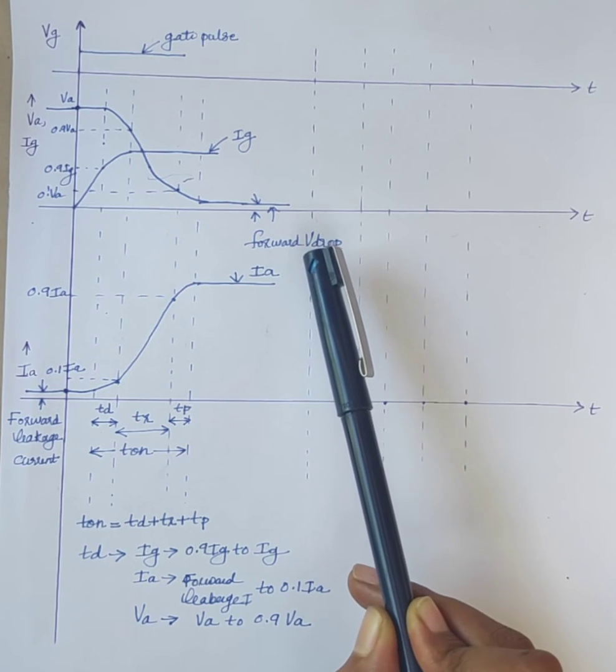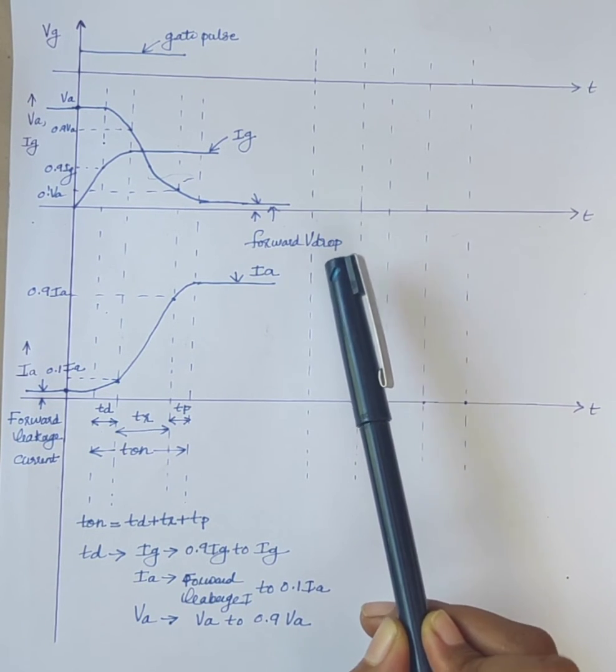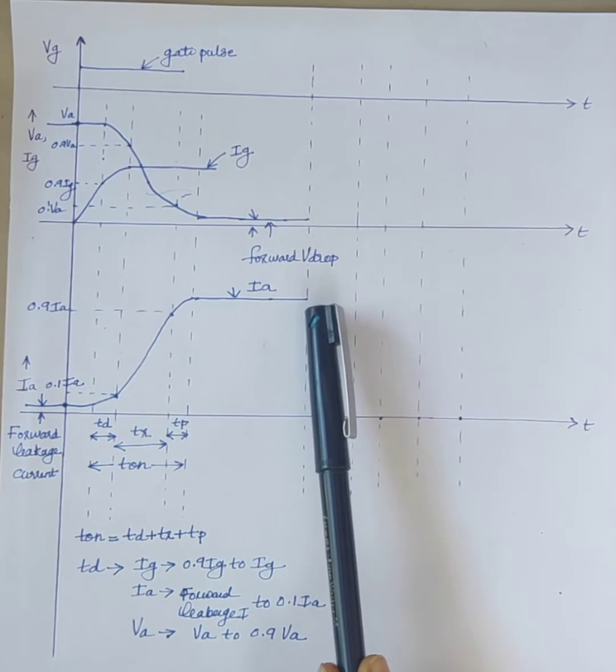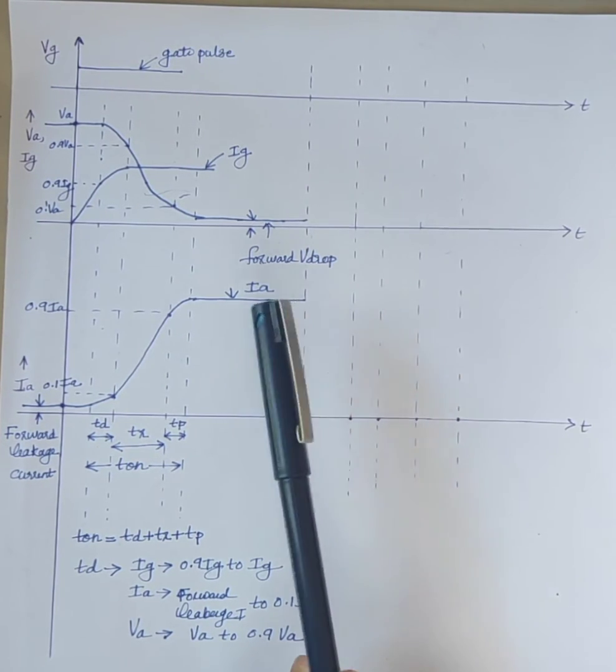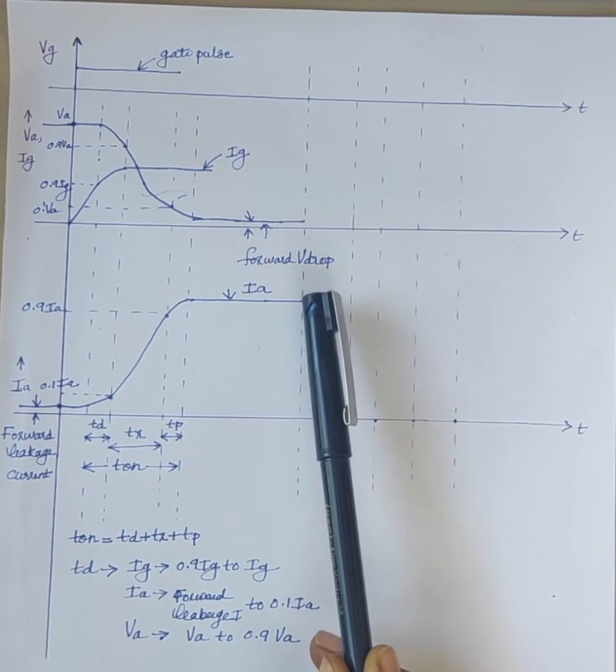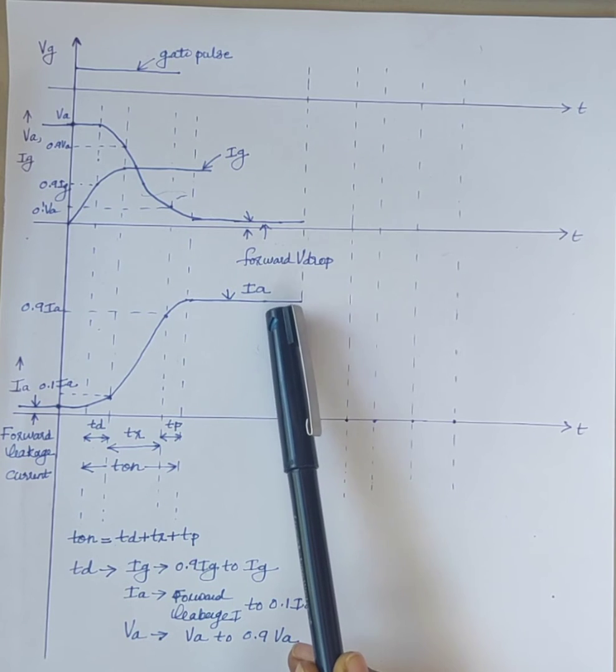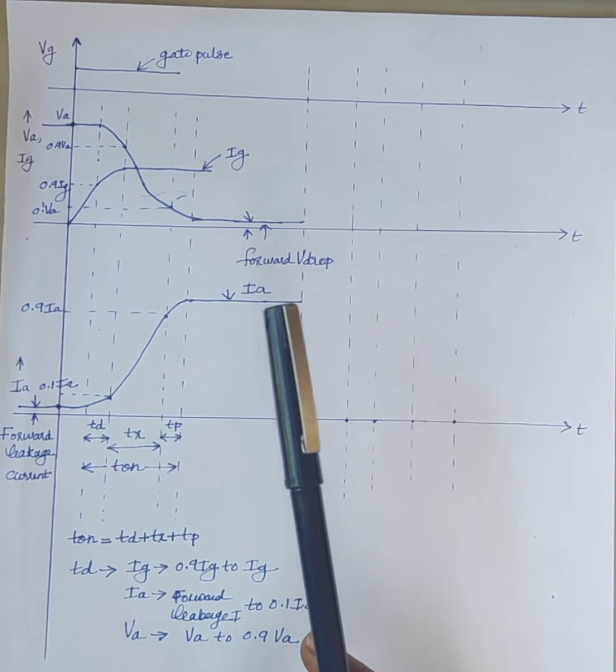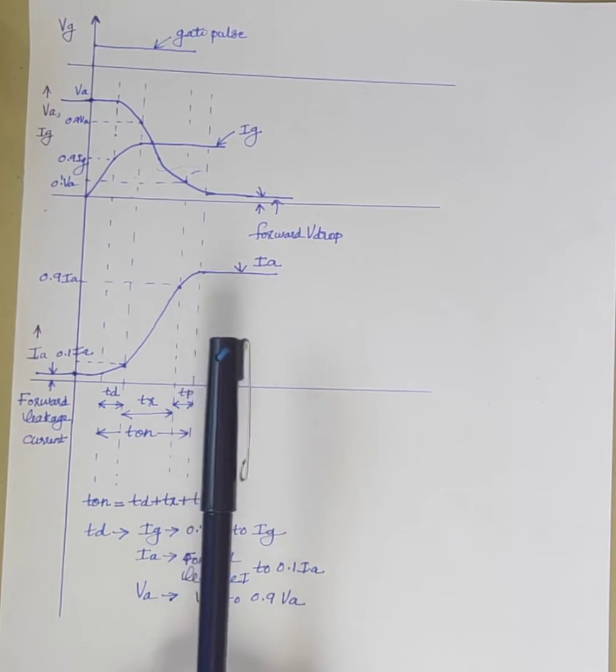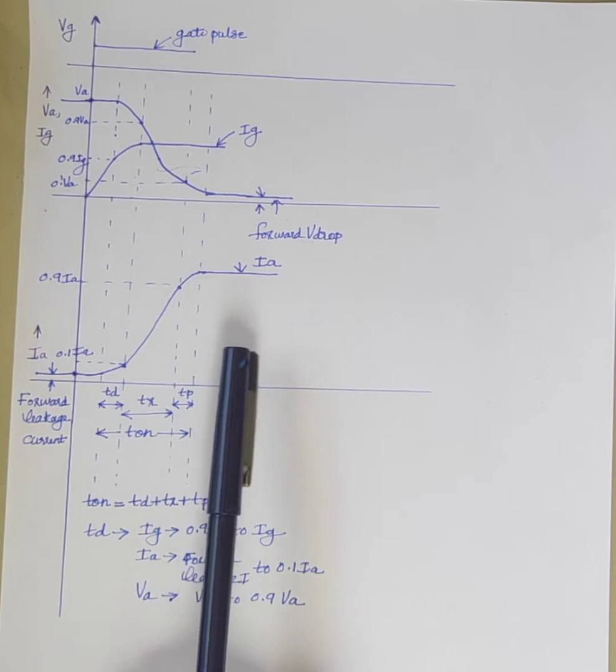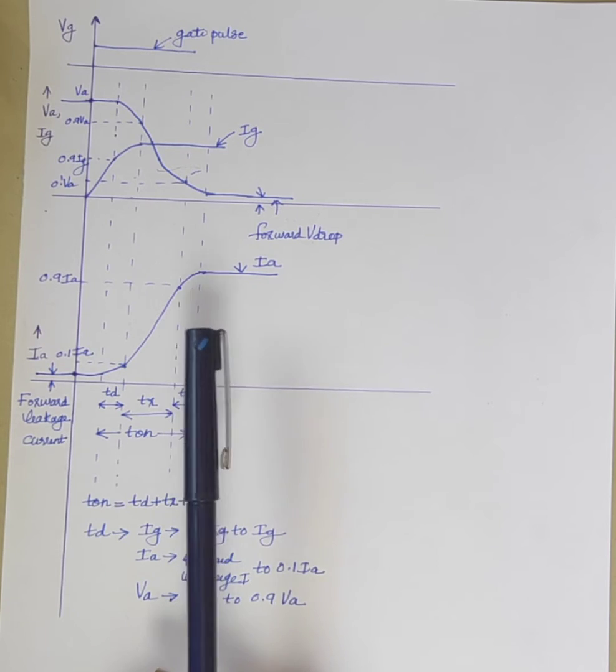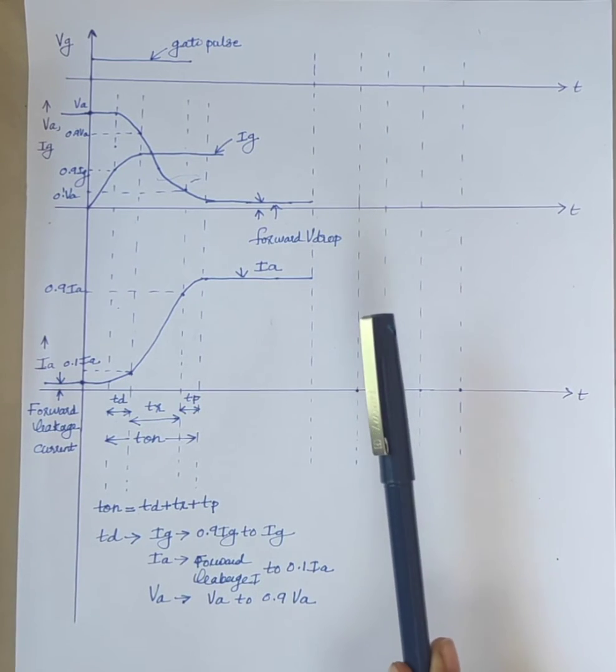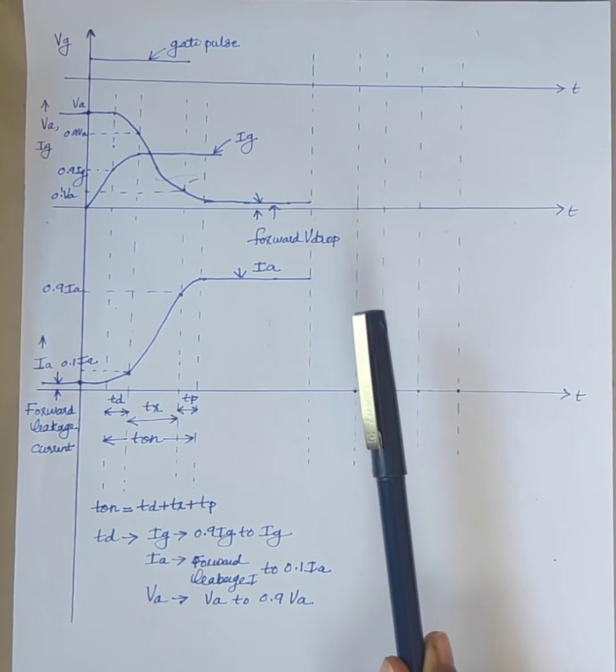Turn off switching characteristics means characteristics of a switch when it changes from forward conduction state to forward blocking state. Once the thyristor is switched on, or in other words anode current is above the latching current, the gate loses control over it. That means gate circuit cannot turn off the device. Therefore commutation circuits are required to turn off the SCR. The process of turning off the SCR is known as commutation. For turning off the SCR, some conditions have to be satisfied.